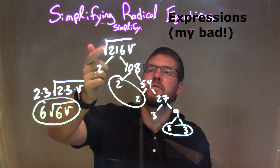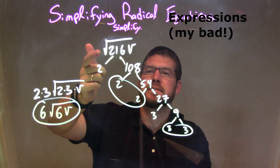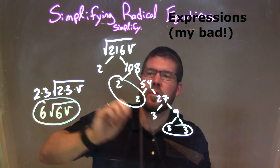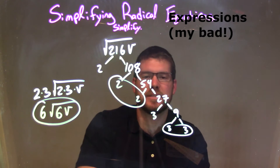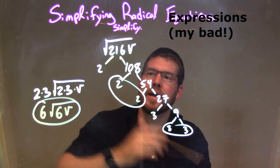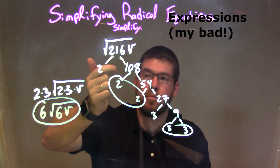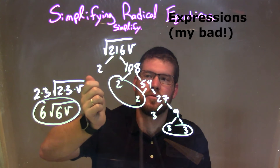So let's recap. We're given the square root of 216v. What I want to do is simplify — find the prime factorization of 216.